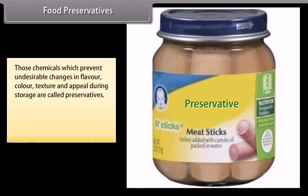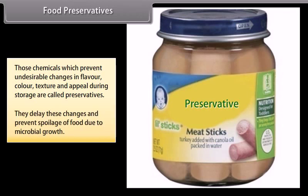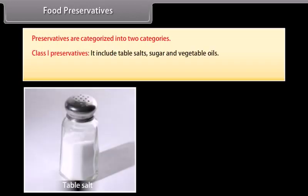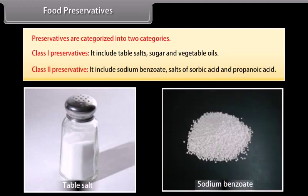Food preservatives: those chemicals which prevent undesirable changes in flavor, color, texture, and appeal during storage are called preservatives. They delay these changes and prevent spoilage of food due to microbial growth. Preservatives are categorized into two classes: Class 1 includes stable salts, sugar, and vegetable oils; Class 2 includes sodium benzoate, salts of sorbic acid, and propanoic acid.